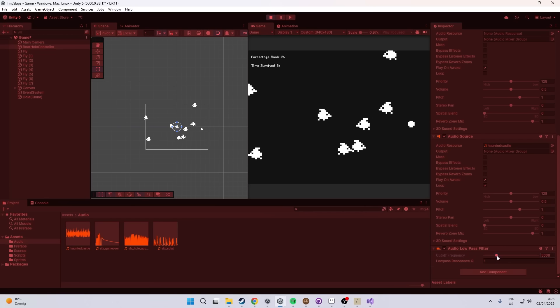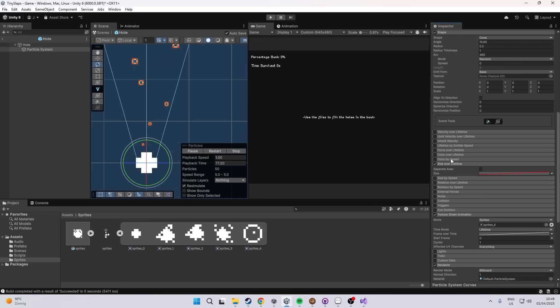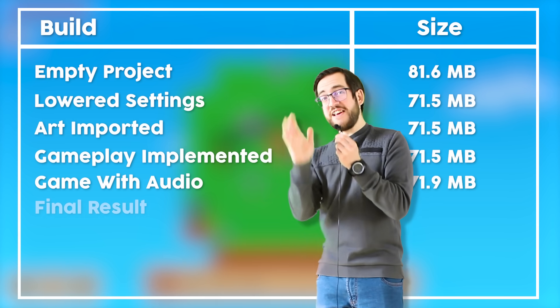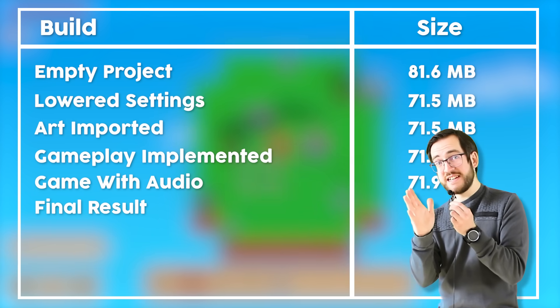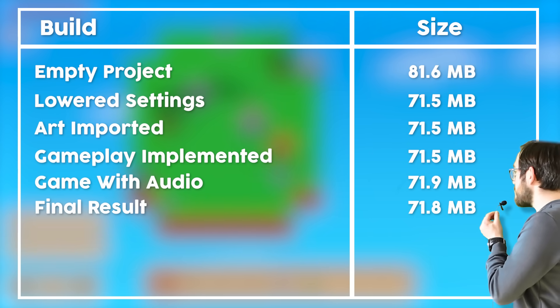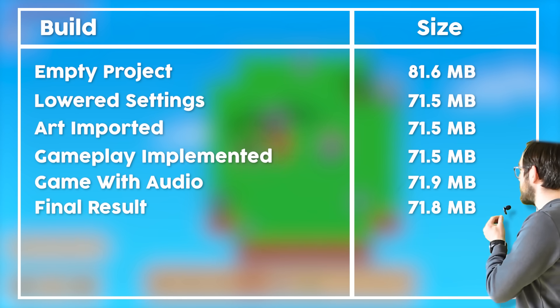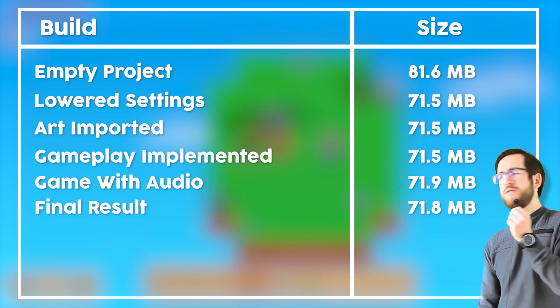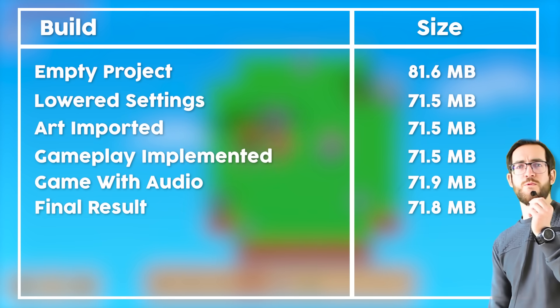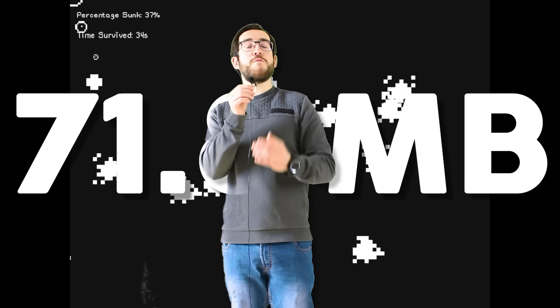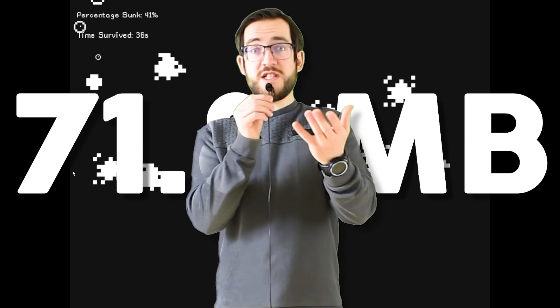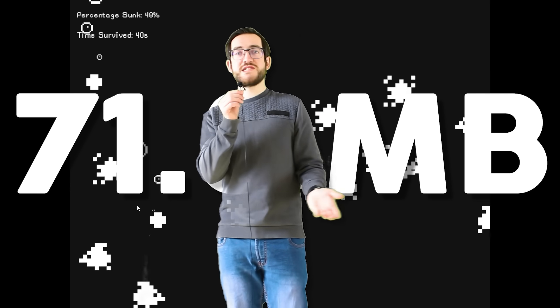I added a little pop-in animation for the holes and some particles, and our final finished game is 71.8 megabytes. It's actually smaller — I added new things in and it got smaller. So there is my answer: how small can a Unity game really be? 71.8 megabytes apparently, which is still pretty big, but considering where we started, that is awesome.